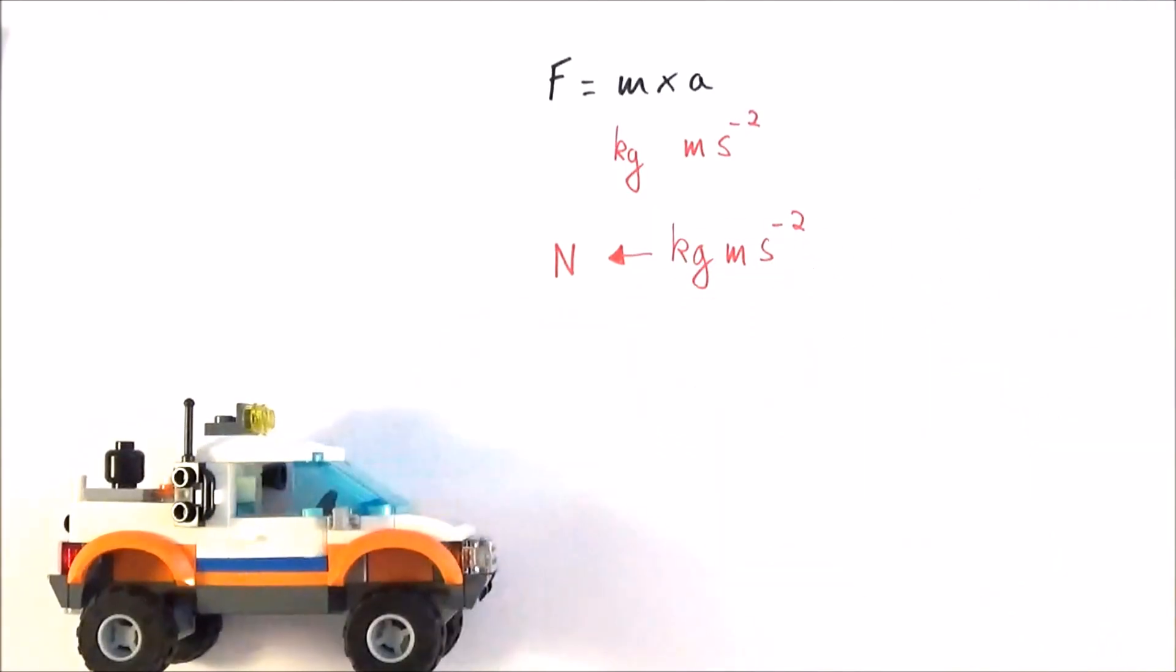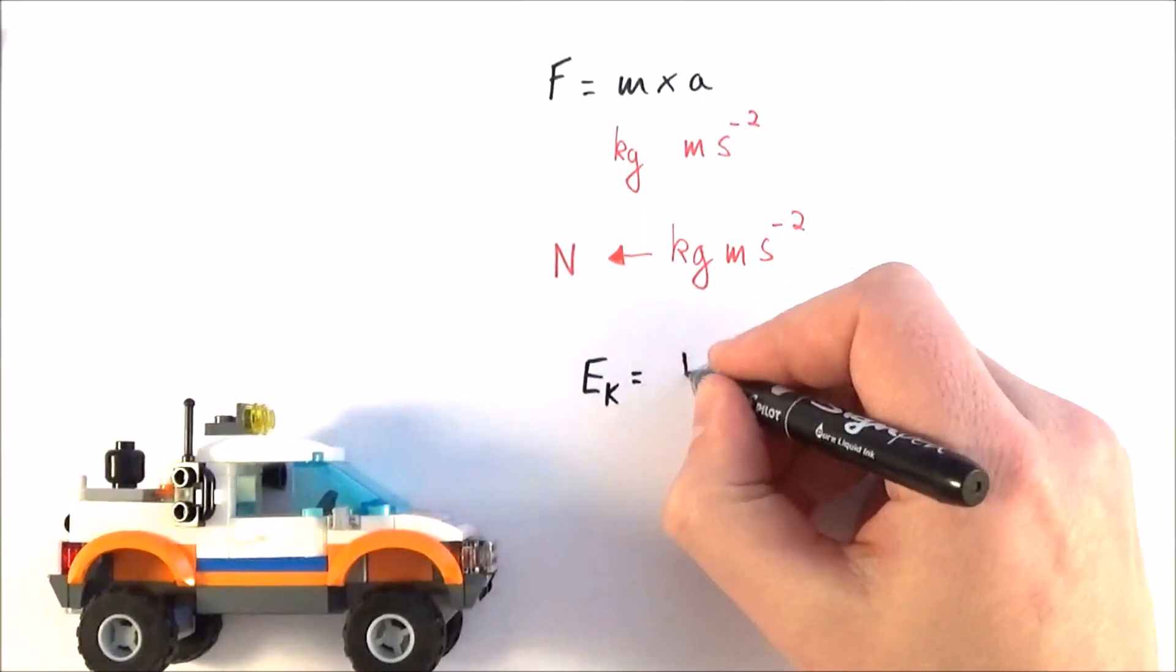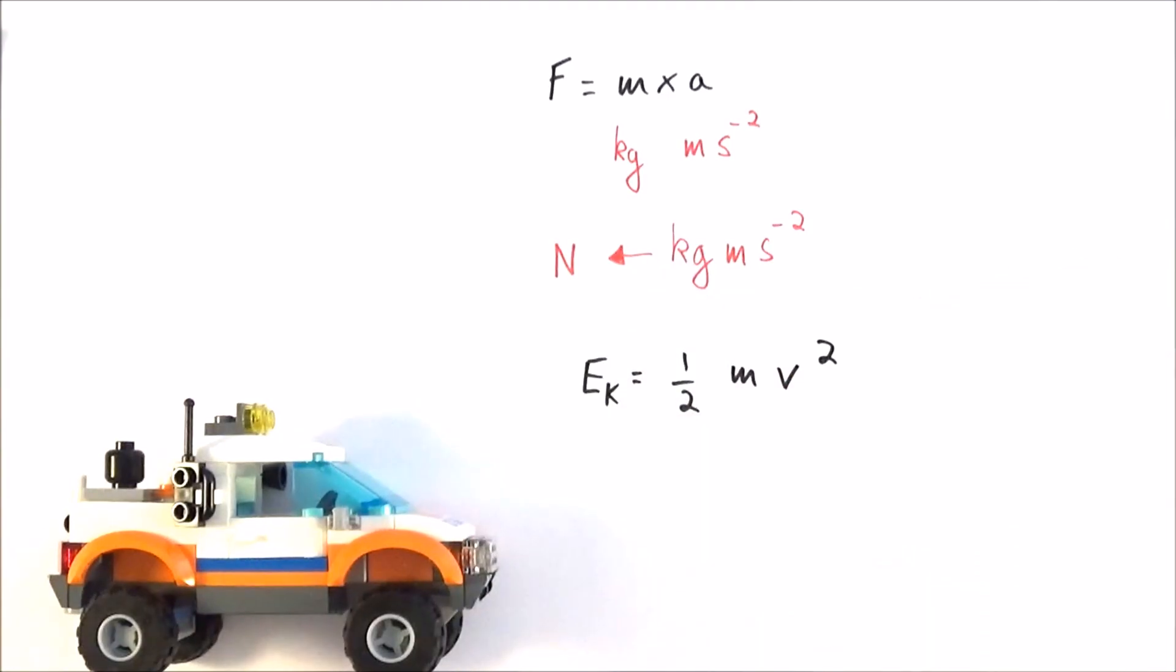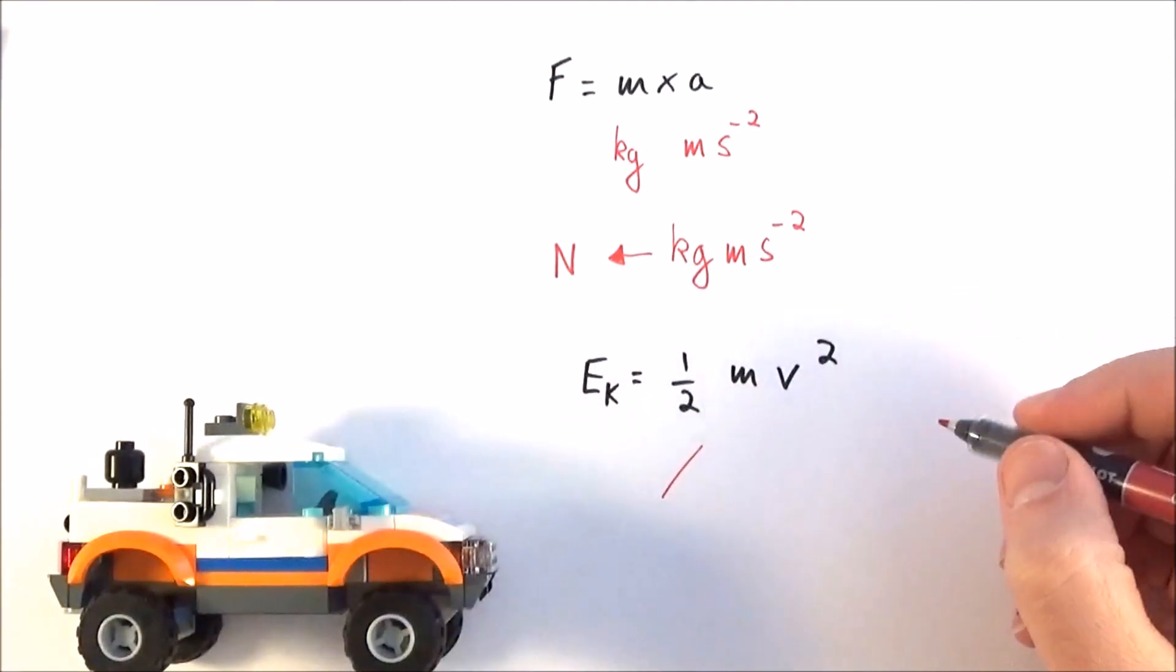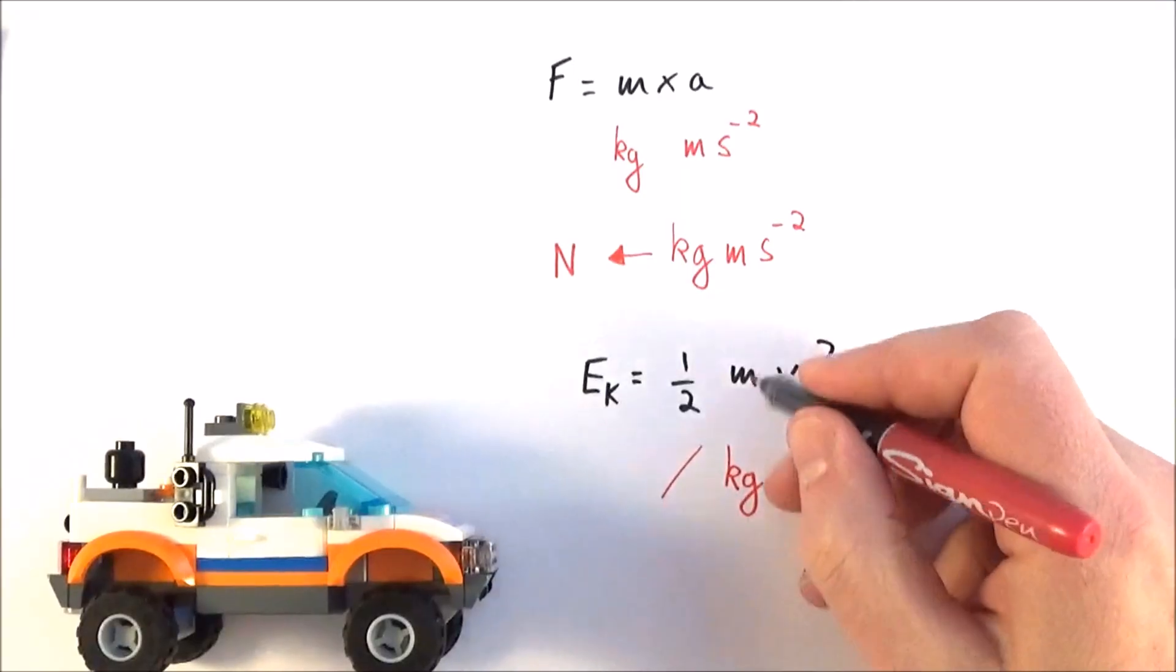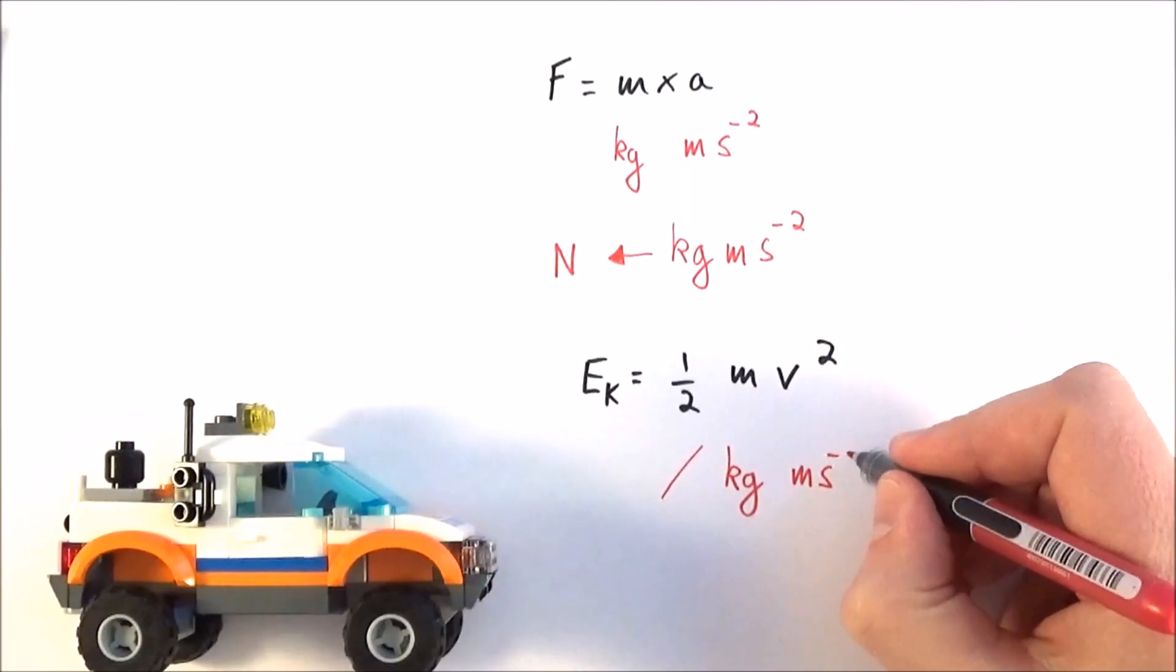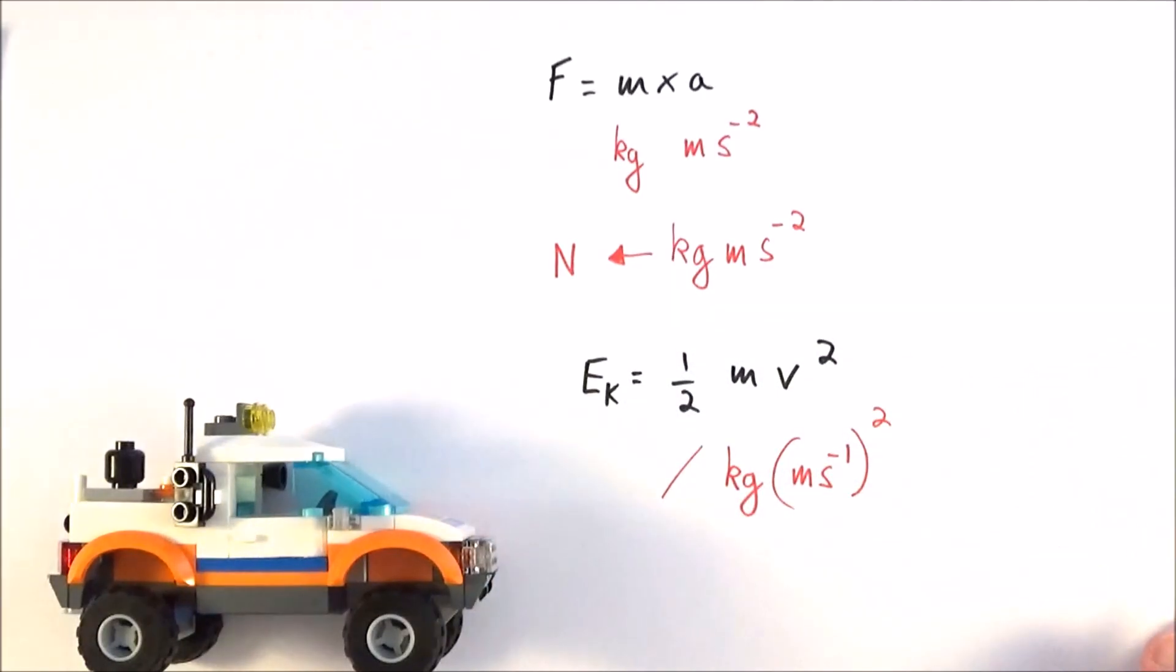We might maybe think about the energy of that vehicle when it's moving, perhaps the kinetic energy, EK, which is equal to a half times its mass times its velocity squared. Well, a half is a unitless quantity, it's just a number. So that has no unit. Mass is measured in kilograms, and velocity is metre per second. But what we've done is we've squared that velocity.